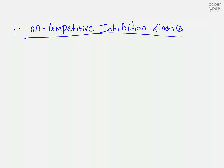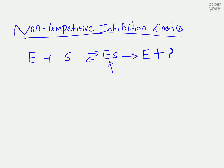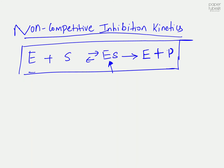Let's talk about non-competitive inhibition kinetics — this is a bit more complicated than competitive or uncompetitive inhibition. As usual, we write the reaction mechanism: enzyme plus substrate associate to form an enzyme-substrate complex, and the initial velocity depends on the concentration of that complex. This is the same mechanism we used for Michaelis-Menten kinetics, competitive inhibition, and uncompetitive inhibition.